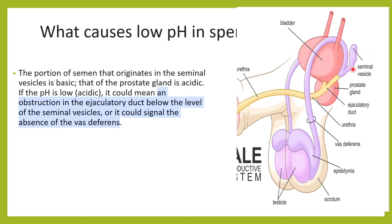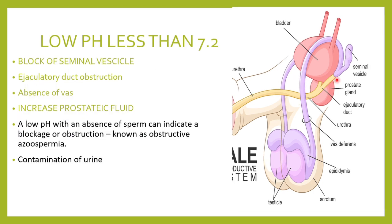If there is a block in the ejaculatory duct where the vas deferens meets the seminal vesicle duct, the seminal fluid does not come through. The basic component decreases and the acid component increases. This is ejaculatory duct obstruction. Similarly, if the vas deferens is blocked, or if increased prostatic fluid is coming, that can also increase acidity and lower the pH.